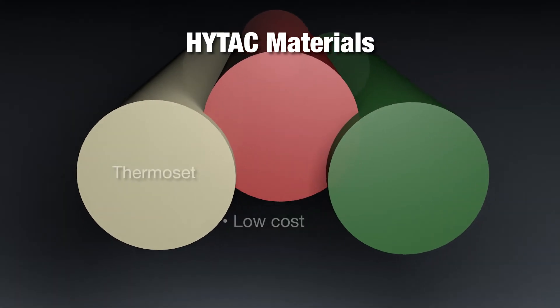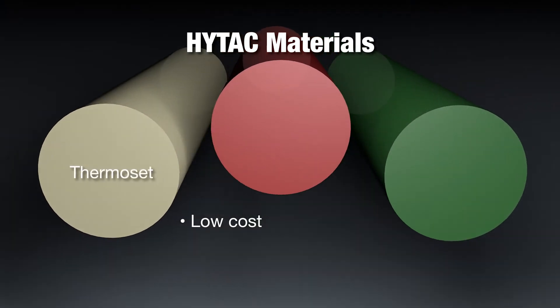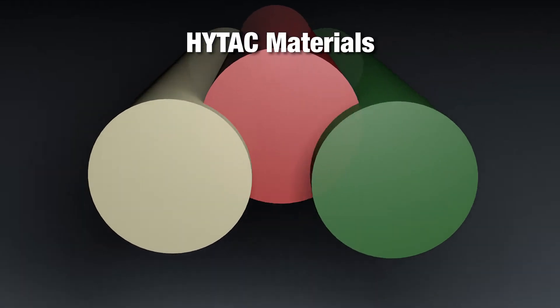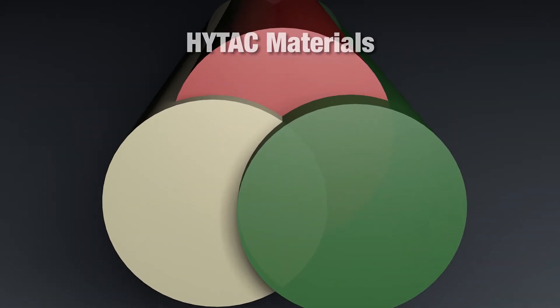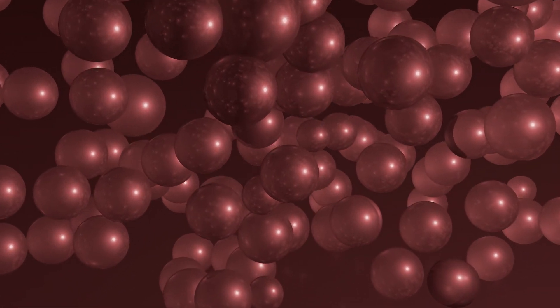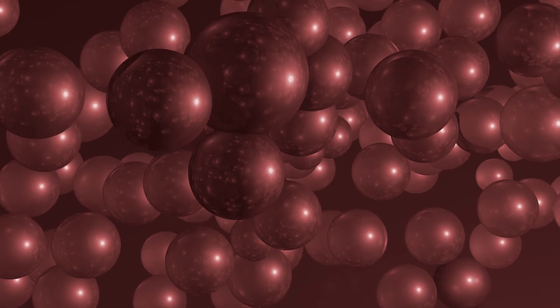Thermoset epoxies are entry-level products, while both copolymer and thermoplastic materials are easier to machine and offer superior plastic distribution when thermoforming. High-tech syntactic foam is a combination of hollow glass microspheres bound together by epoxy or thermoplastic materials.